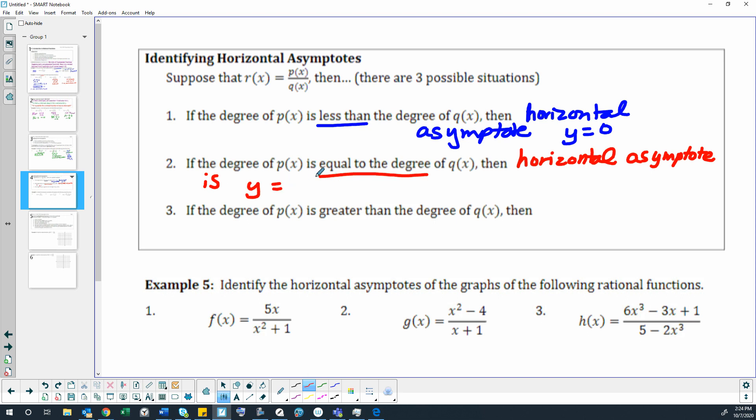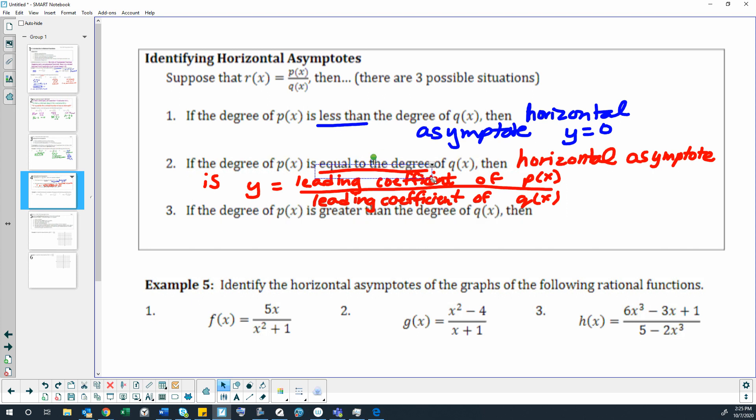It will be y equals the leading coefficient of our top polynomial, p of x, divided by the leading coefficient of our denominator polynomial, q of x. If it is equal to the degree, then that is what is going to happen.